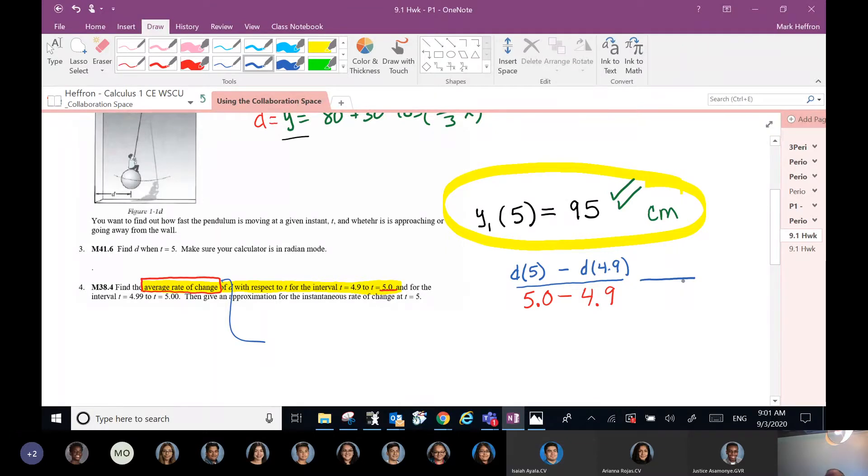Madi, what do you think the units would be of the numerator, D5 minus D4.9? Um, 0.1. So that would be the answer of 5 minus 4.9. So what would be the, not so much what the answer is in the numerator, but just what are the units? Like what does D5 and D4.9 represent? The distance.